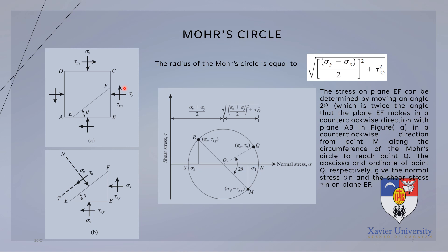The stress on plane EF can be determined by moving an angle equal to 2-theta — twice the angle that plane EF makes with plane AB — in a counterclockwise direction from point M on the circle. We move from line OM through an angle of 2-theta to reach point Q. The abscissa and ordinate of point Q give the normal stress and the shear stress on plane EF respectively.